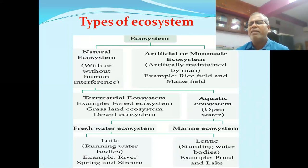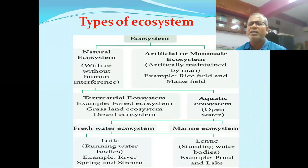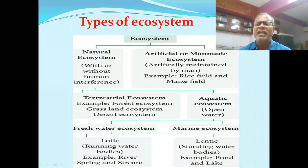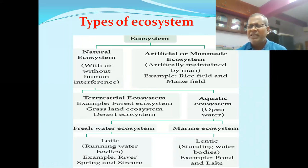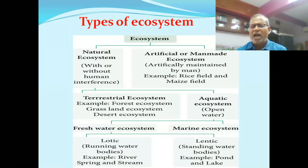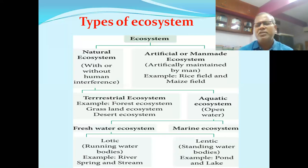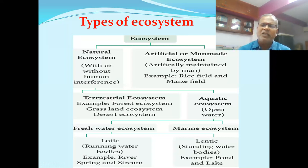In the natural ecosystem, one type is the terrestrial ecosystem — the land ecosystem. Another is the aquatic ecosystem — the open water ecosystem. Terrestrial ecosystem includes forest ecosystem, grassland ecosystem, and desert ecosystem.